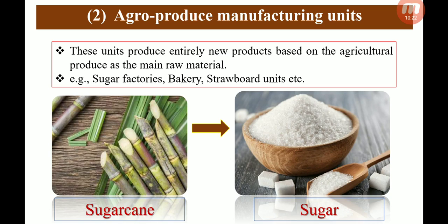The second on-farm activity is agro-produce manufacturing units. Unlike processing units, these units manufacture entirely new products. For example, sugar factories, bakeries, and straw board units. From sugarcane, sugar is produced — a totally different product. So in agro-produce manufacturing units, a completely new product is created. That is the key difference between agro-processing units and agro-produce manufacturing units.